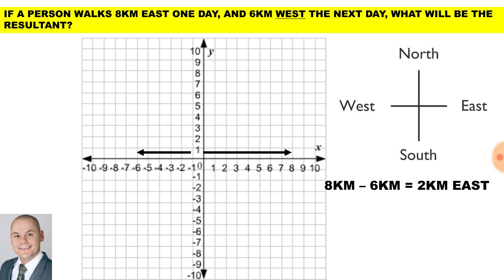Now in this example, a person walks 8km east on one day and 6km west on the next day. What will be the resultant? Well, these two vectors are opposing each other and therefore the resultant will be smaller. 8 minus 6 gives us 2km east.